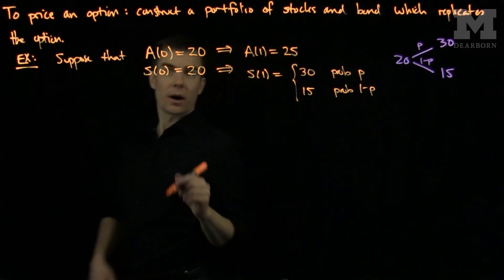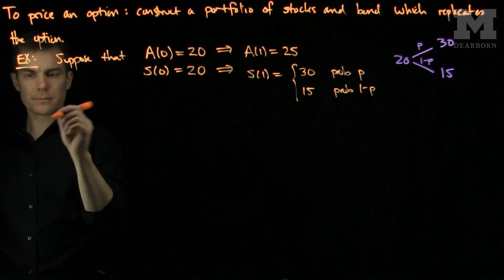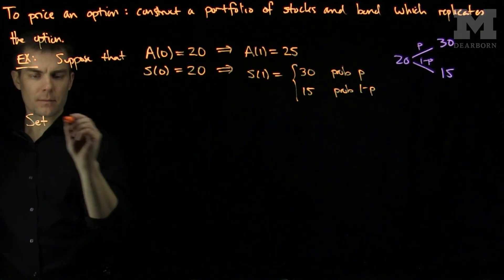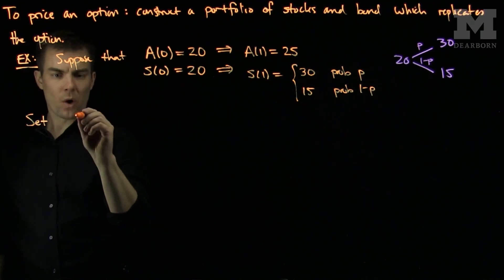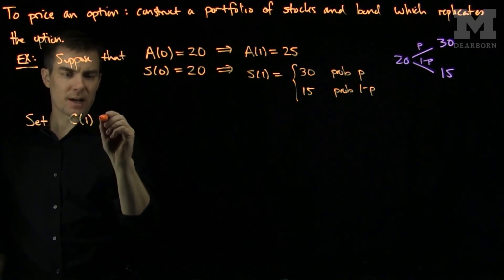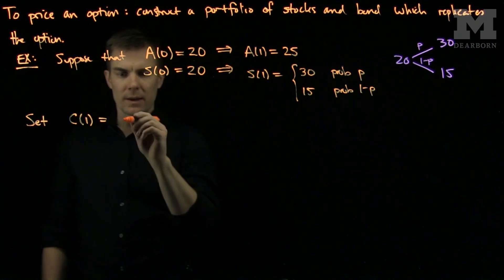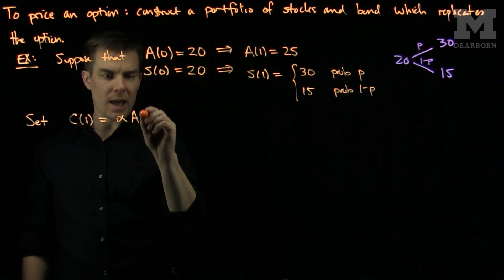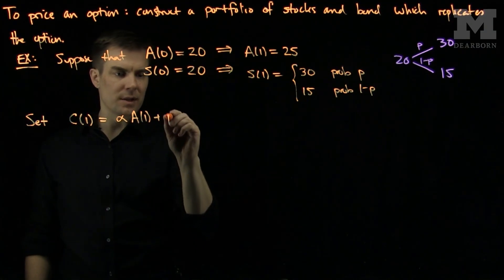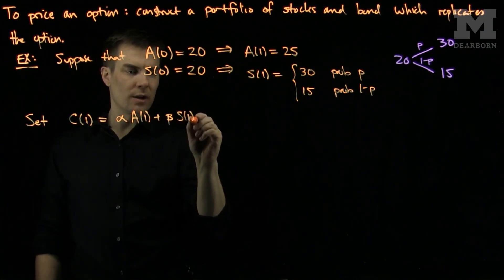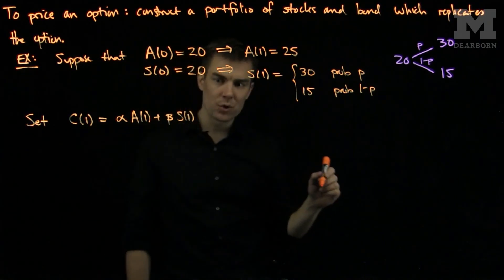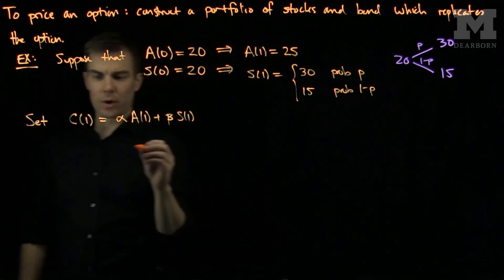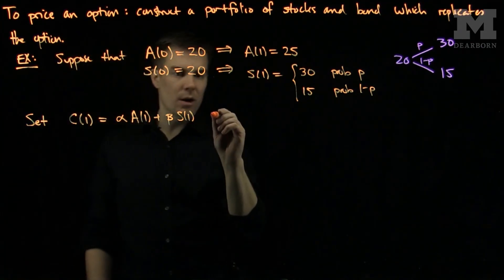So now we'll see what our option is worth. We price our option. We set C(1), the price of my option at time 1, to be alpha times A(1) plus beta times S(1) for some values of alpha and beta which we need to find. Now, we write this as two equations and two unknowns.